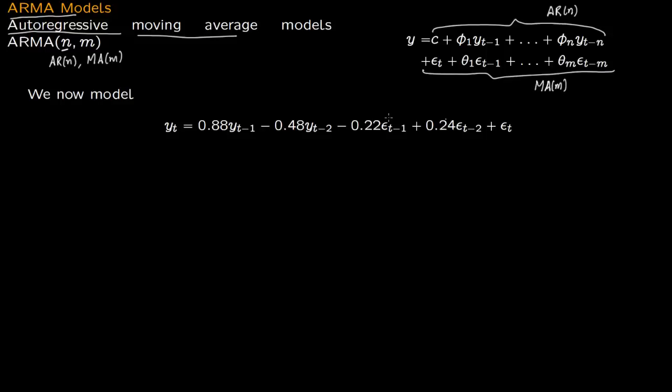A simple example is ARMA(2,2). First, the autoregressive part has two lags, t-1 and t-2, which is why we have 2 here. Then we have the moving average part.